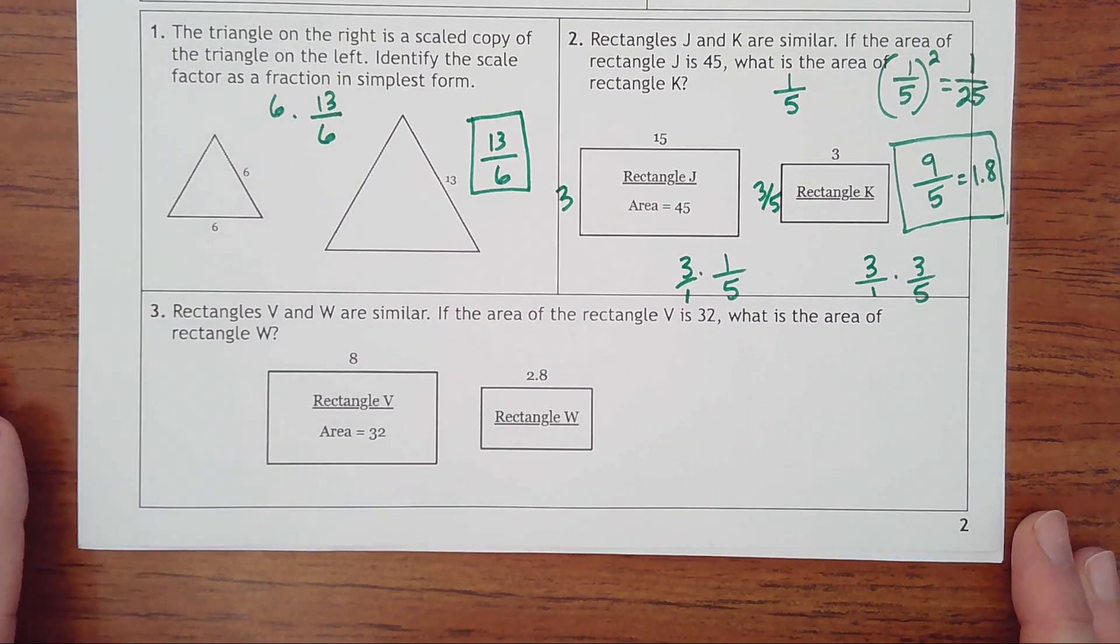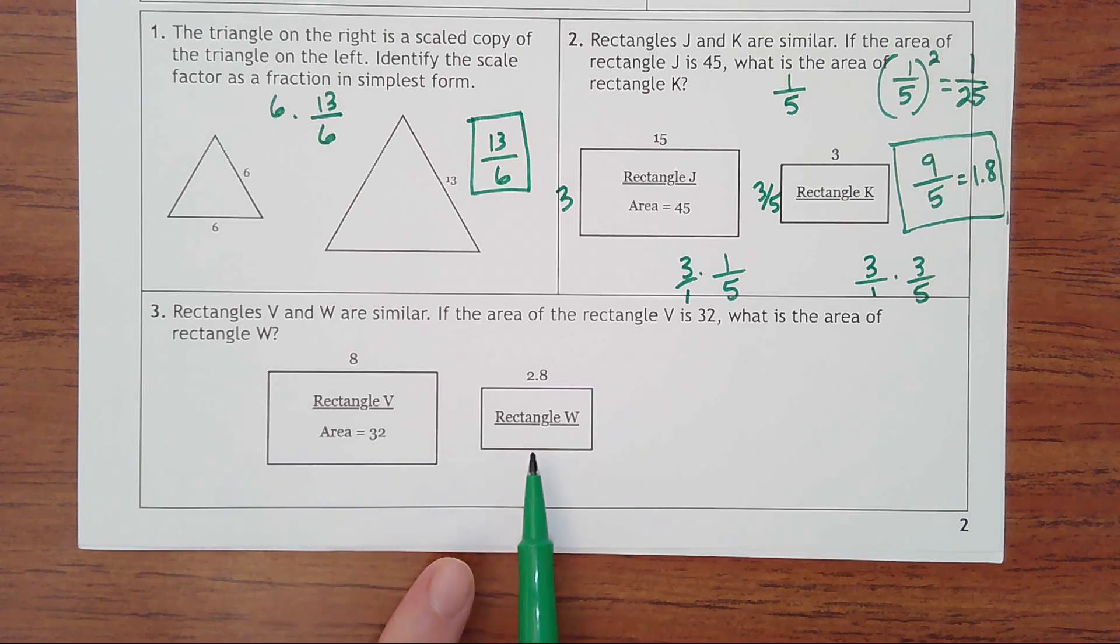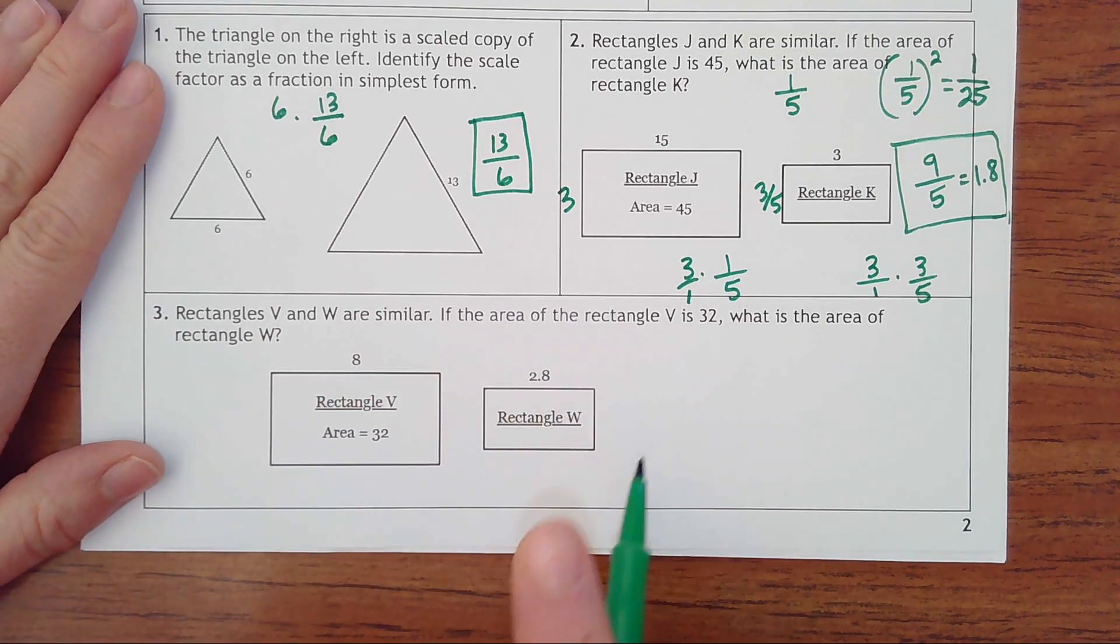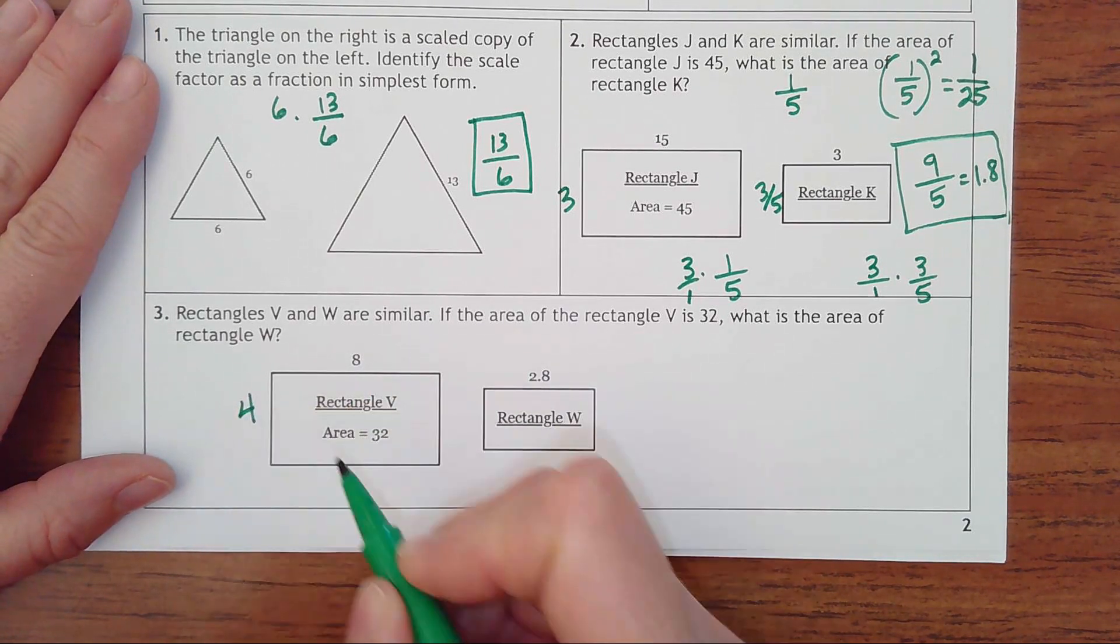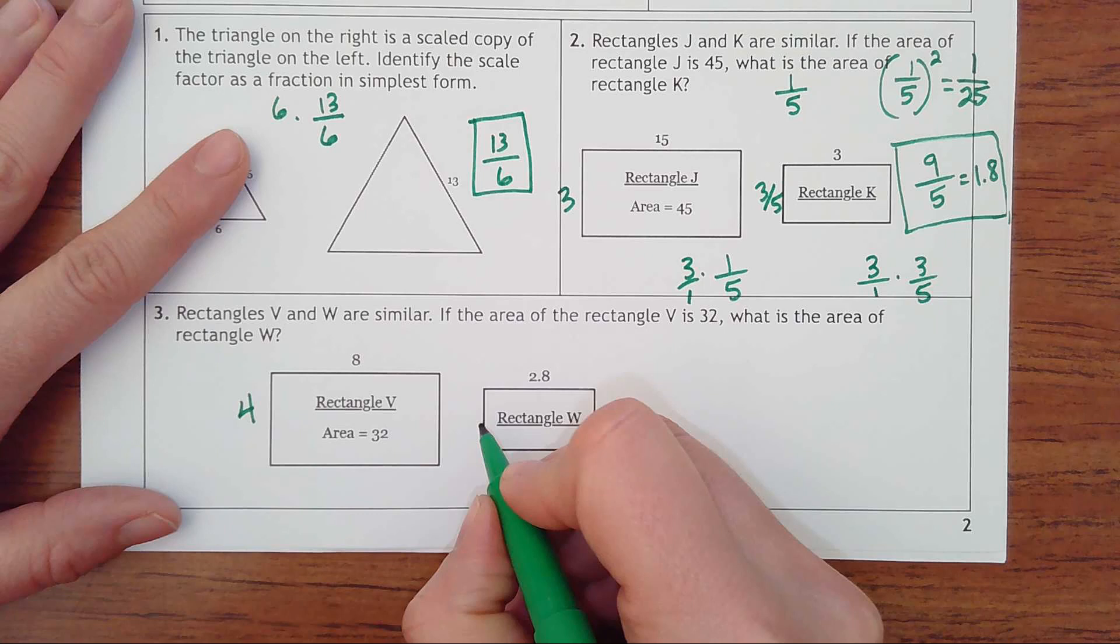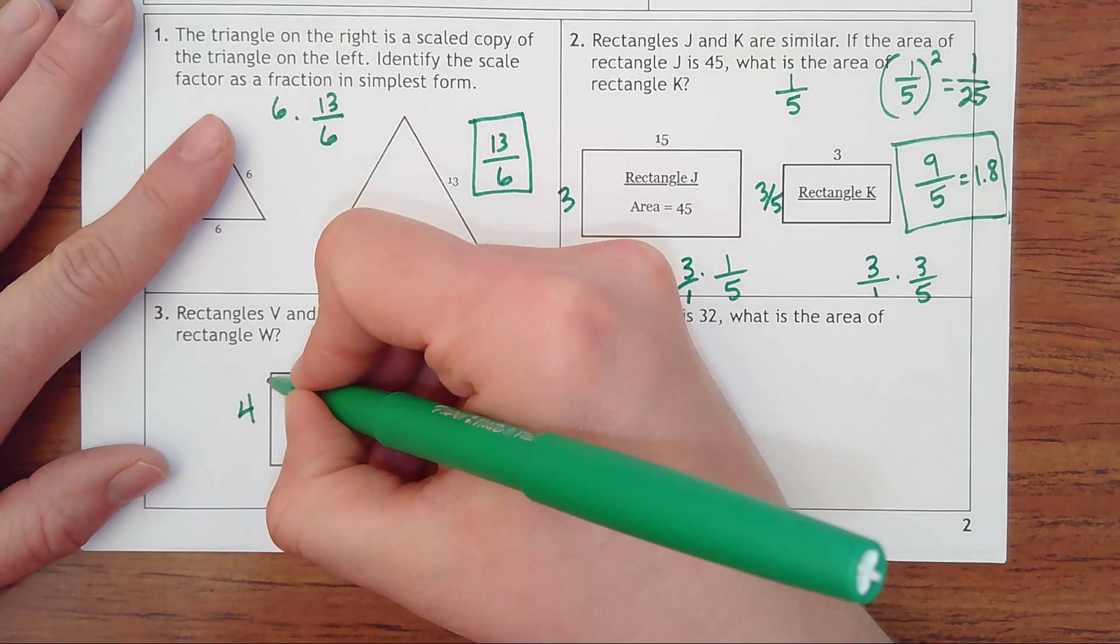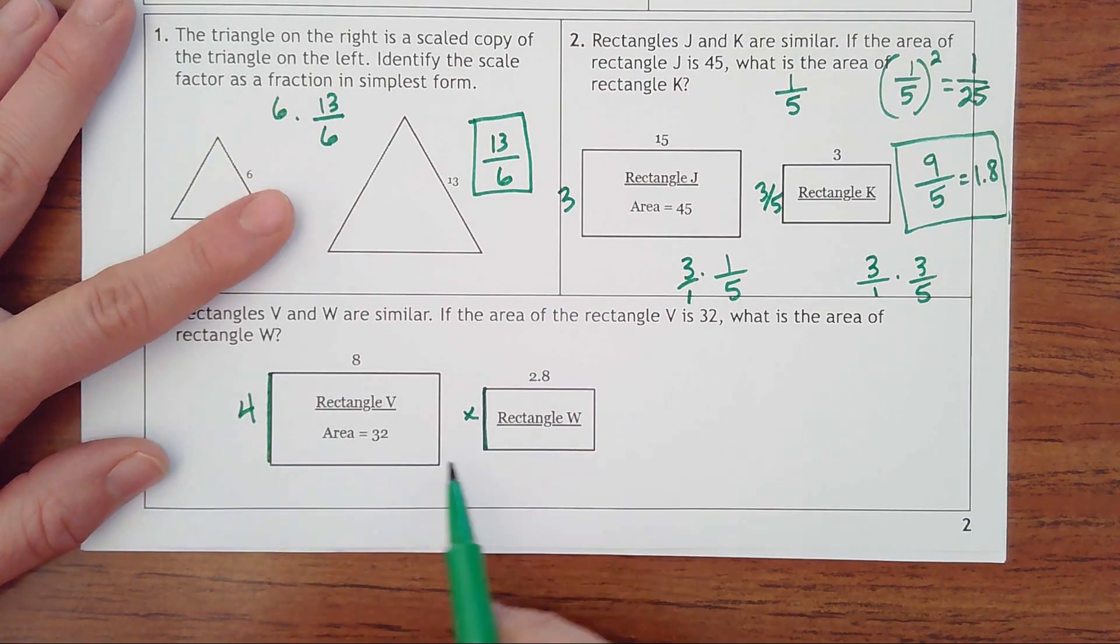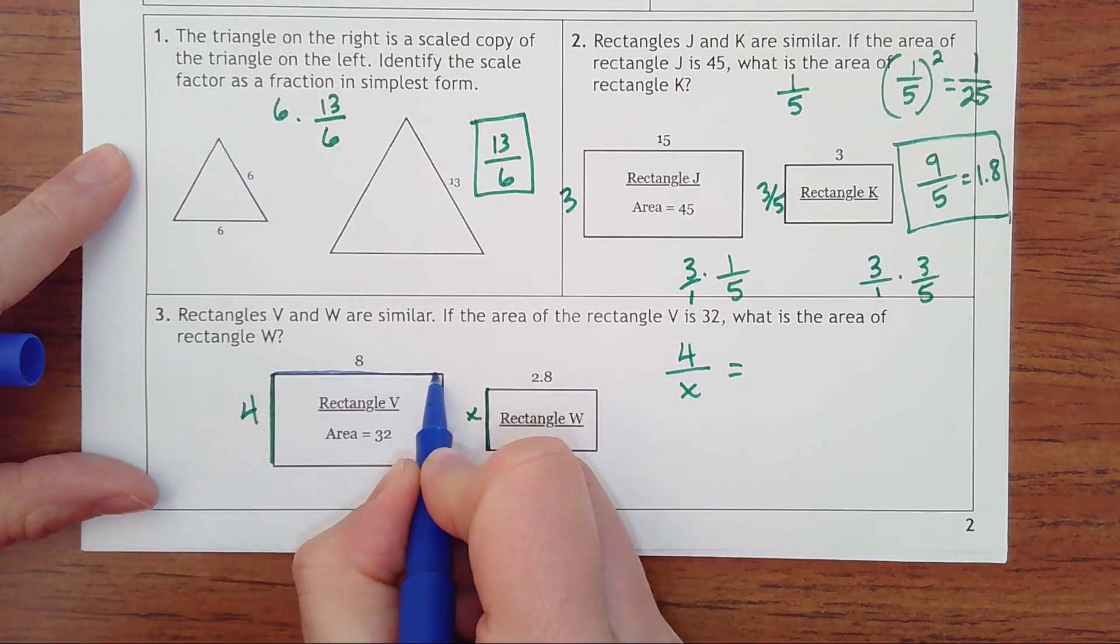Like on number three, it gets kind of weird numbers. If you do that, you have another one where the rectangles are similar. Area of rectangle V is 32. What is the area of W? And so this definitely isn't as easy to see what's the pattern. So I would definitely recommend going ahead and saying 32 came from taking eight times some width would be four. And so what you can also do is even make a proportion and we'll do this a lot later on. So what we need to do is make a fraction comparing something. I like to do one side of one rectangle compared to that corresponding side of the other rectangle. So I would have four to X is equal to, we'll do the longer side, eight to 2.8.